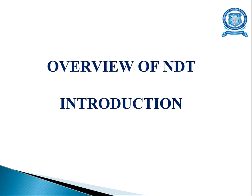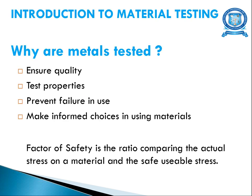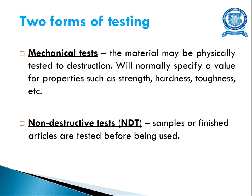Coming to the introduction — overview of NDT. Introduction to material testing: why are metals being tested? Metals are being tested to ensure quality, to test the properties of the metals, to prevent failures in usage, and to make informed choices in using materials. The factor of safety is the ratio comparing the actual stress on a material and the safe useful stress, which is very important in testing of materials.